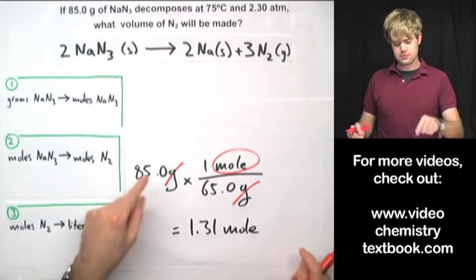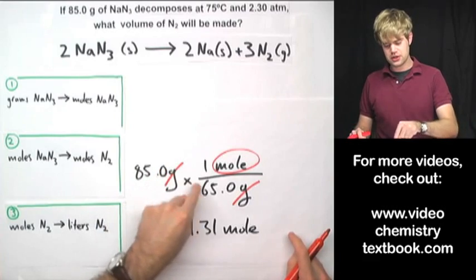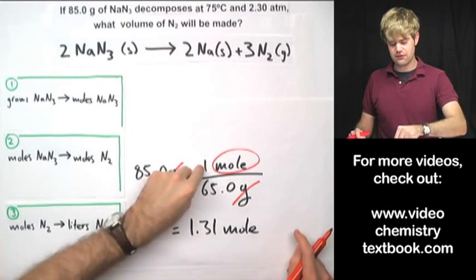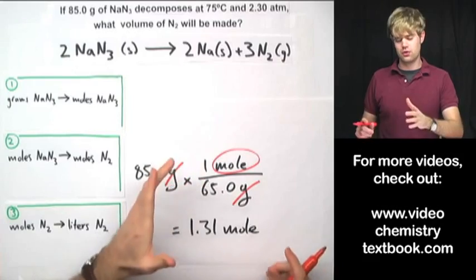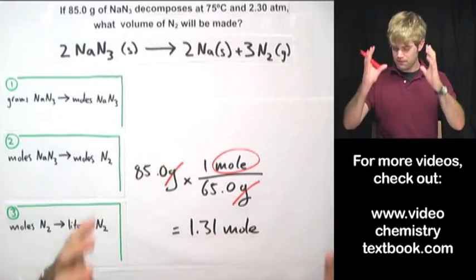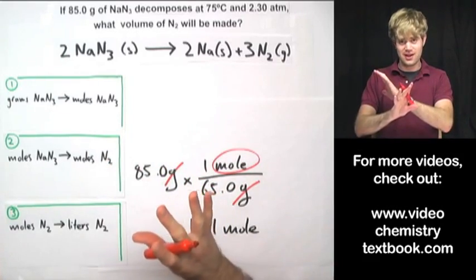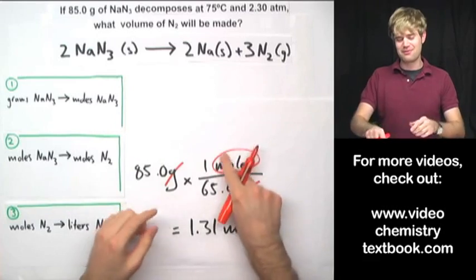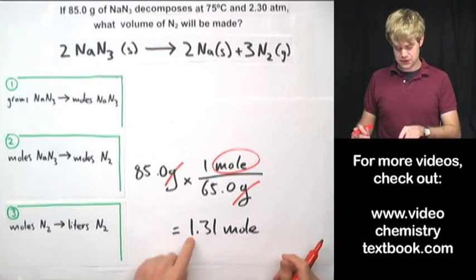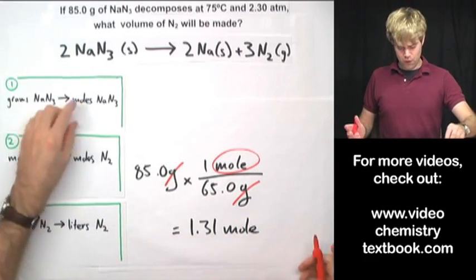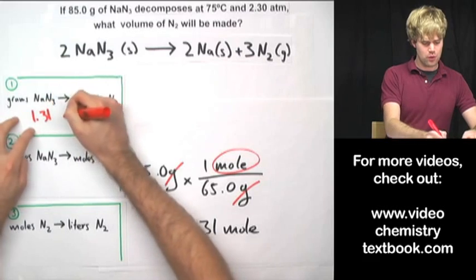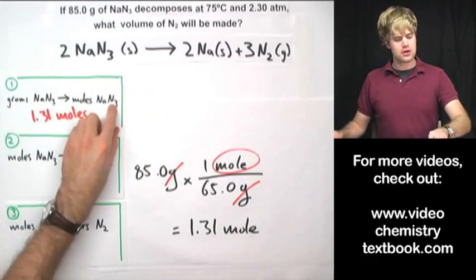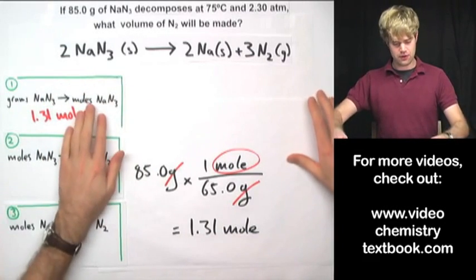We round to three significant figures because we have three digits in 85.0 and three in 65.0. The 1 in '1 mole' is an exact number with an infinite number of significant figures, so it doesn't affect rounding. We end up with 1.31 moles of sodium azide, NaN3 — that's the first part of the problem.